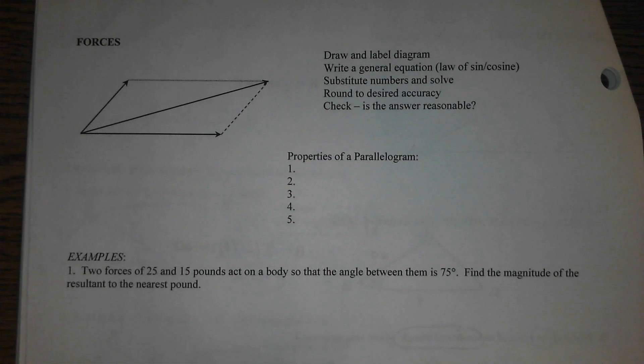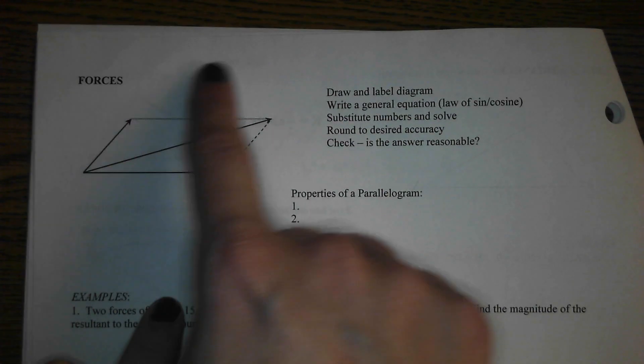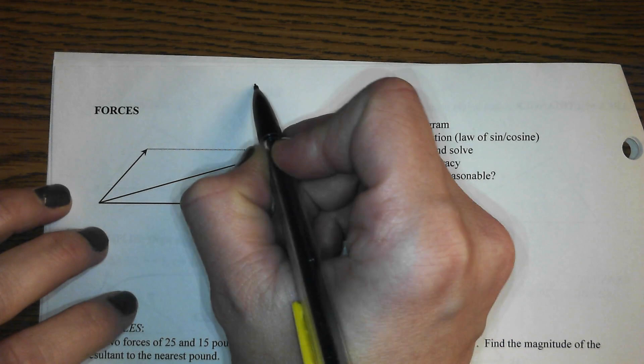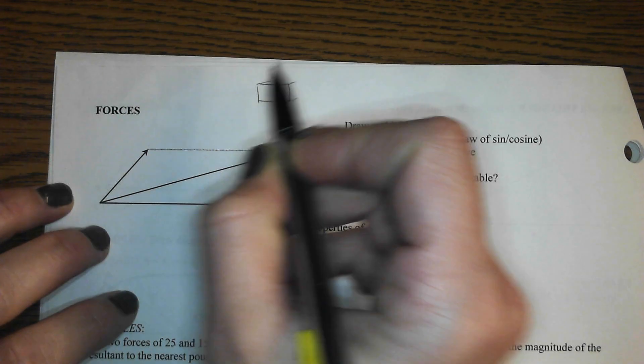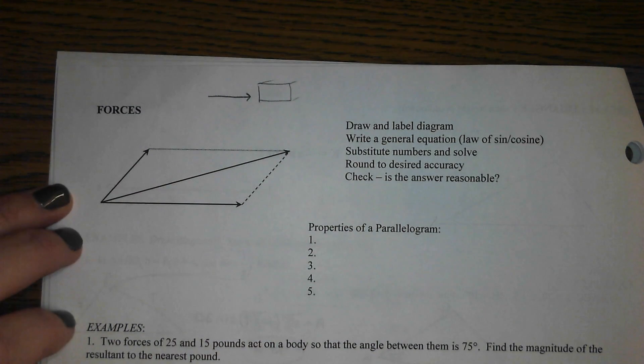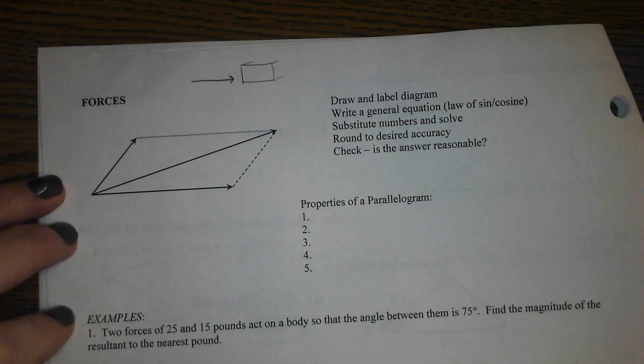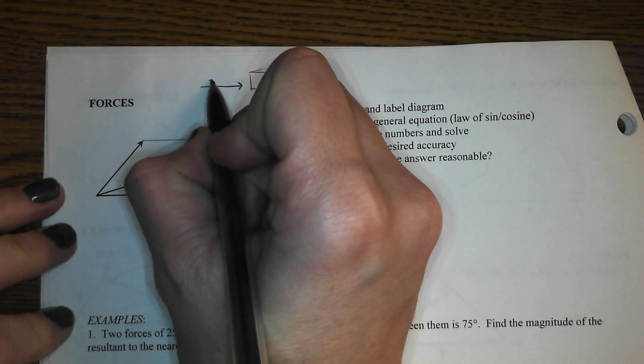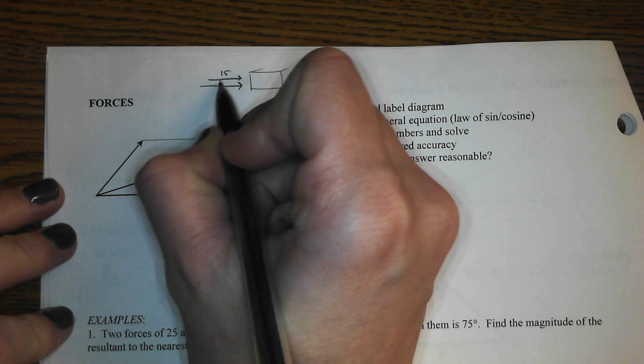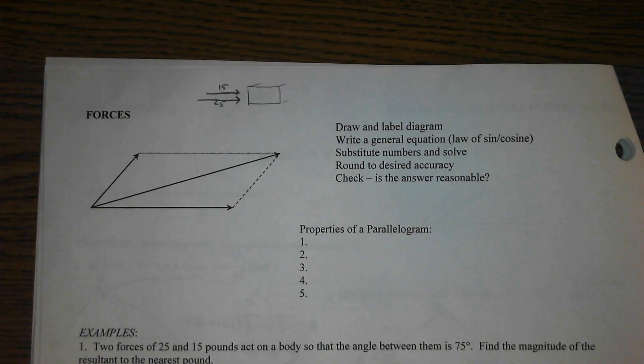So if two people were pushing on an object, one person with 25 pounds of force, let's say you're pushing a box across the floor, one person is pushing with 25 pounds of force and the other person is pushing in the exact same direction with 15. Those would be coinciding with each other and working together.